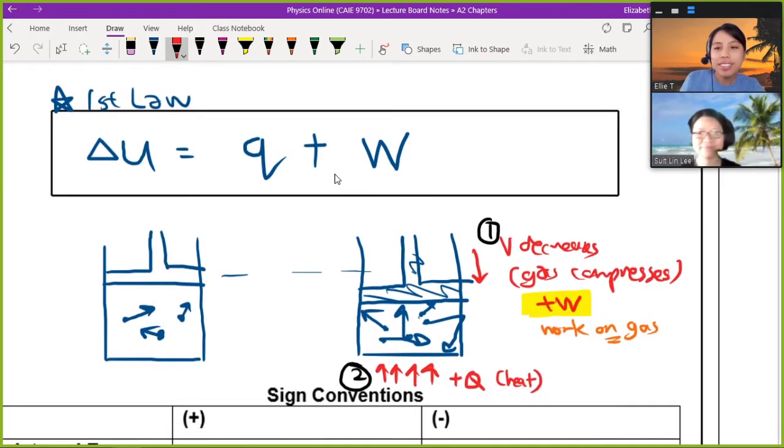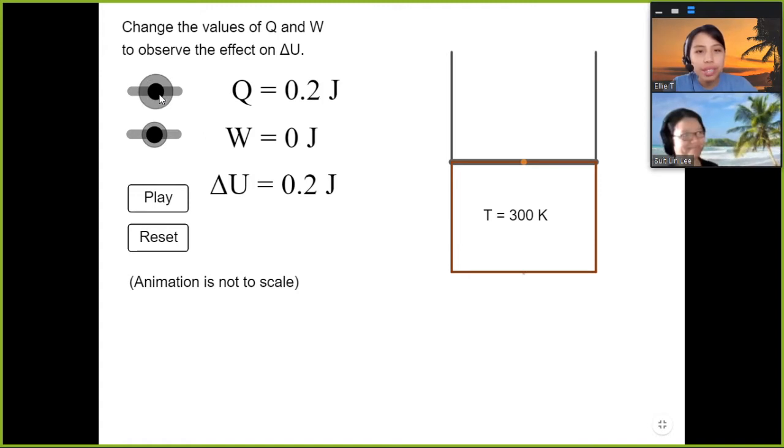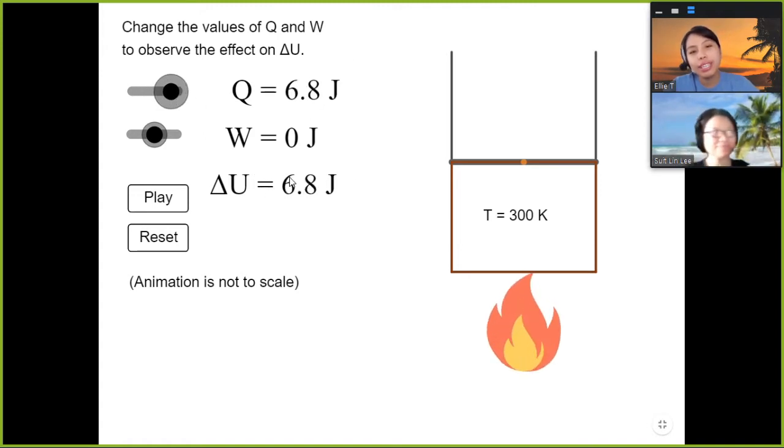So yeah, I mentioned simulation. Let me show you a very quick one. So here is just basically showing you how you can see the values change. So you want to increase this delta U. What you can do is, number one, you add heat. So you see, fire come out. 6.8, 6.8. Internal energy increase now.